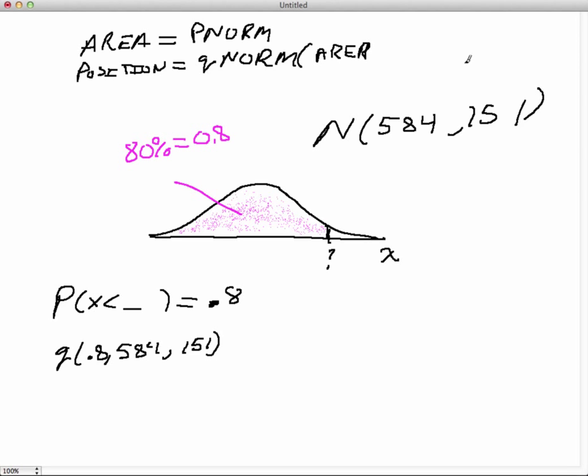So the generic version of Q norm is going to be, you give it the area. That's the first thing you give it, whatever area that you were given. That's the area. And then we give it back the mean, and we give it back the standard deviation. So we give it those three pieces of information, and it's going to give us back the position there. So let's go back into R studio and let's go ahead and do that.